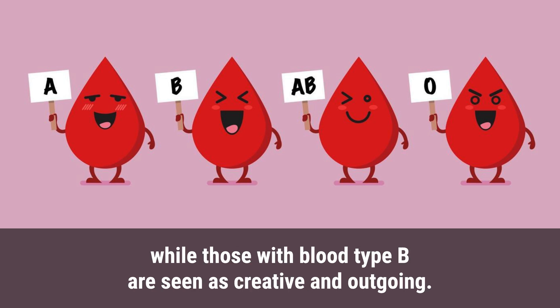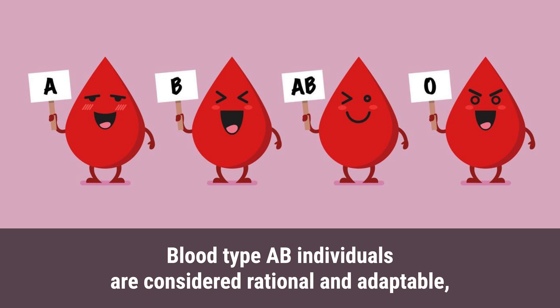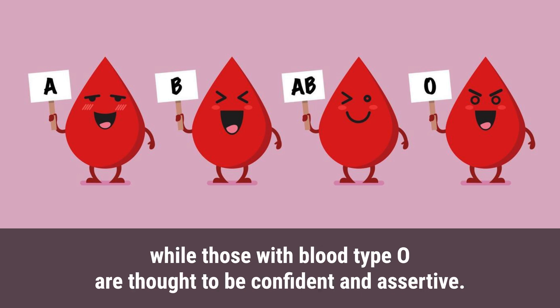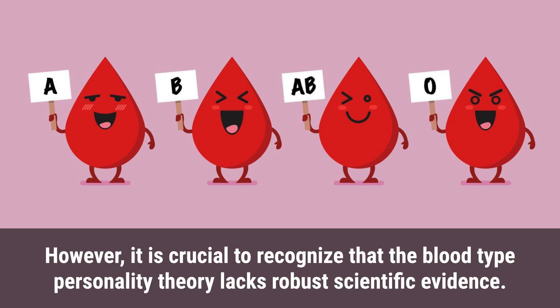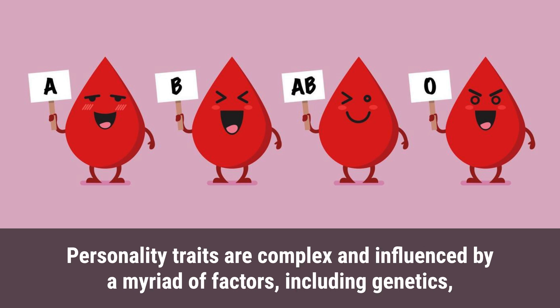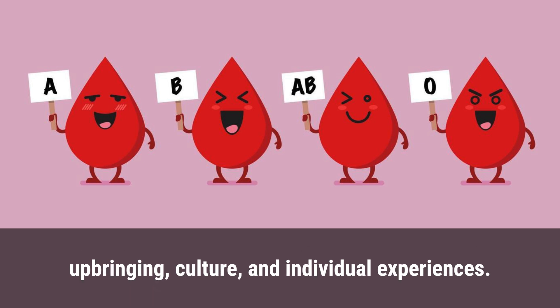Those with blood type B are seen as creative and outgoing. Blood type AB individuals are considered rational and adaptable, while those with blood type O are thought to be confident and assertive. However, the blood type personality theory lacks robust scientific evidence, as personality traits are complex and influenced by a myriad of factors including genetics, upbringing, culture, and individual experiences.